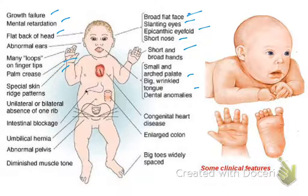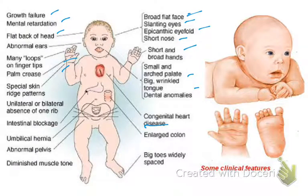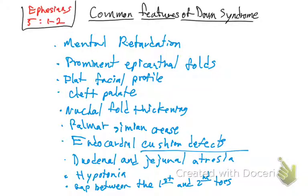In the heart, they have congenital heart disease as we mentioned, and endocardial cushion defects. They can get an enlarged colon. They can have widely spaced big toes. They can have bilateral or unilateral absence of one rib. Remember that they have poor growth.